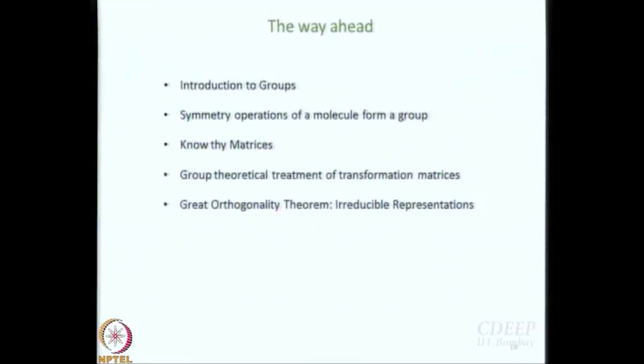Once we cross the activation barrier of group theory and matrices, the Great Orthogonality Theorem will answer all our questions: how many irreducible representations are there, what is the dimensionality of each, and what are these representations? It will take us a little more than a week to get there. From there we will work out the character tables as promised, and then we are back in chemistry — molecular orbital theory, symmetry-adapted linear combinations, bonding, and if time permits, molecular vibrations. That is the plan.